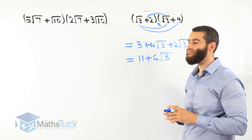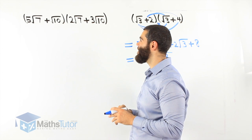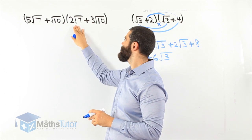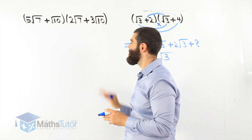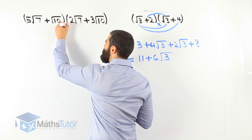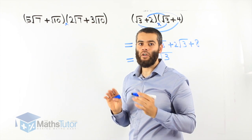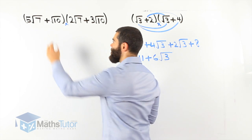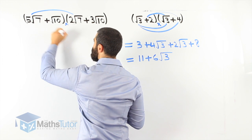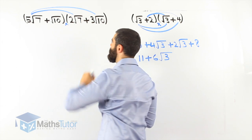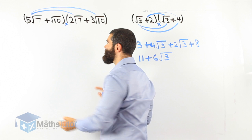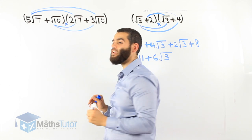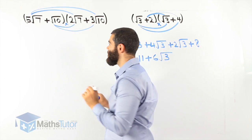Let's do another example. We have another binomial product: 5 root 7 plus root 10, all in brackets, multiplied by 2 root 7 plus 3 root 10, all in brackets. We know we are multiplying them — there is an invisible multiplication. Always be careful and take it easy, don't rush so you don't make silly mistakes. 5 root 7 is multiplied by 2 root 7, then 5 root 7 times 3 root 10, then root 10 times 2 root 7, and root 10 times 3 root 10.